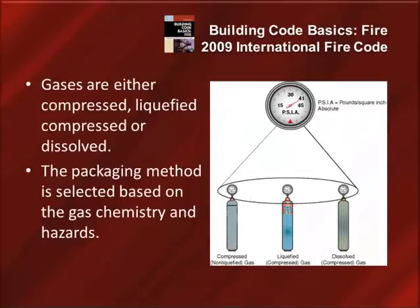In the 2009 IFC, gases are classified as either being compressed, liquefied compressed, or dissolved. For any material to be a gas, it must have a vapor pressure of at least 41 pounds per square inch absolute, or 41 PSIA. Your packaging method is going to be selected based upon the chemistry of the gas and the hazards that it presents.